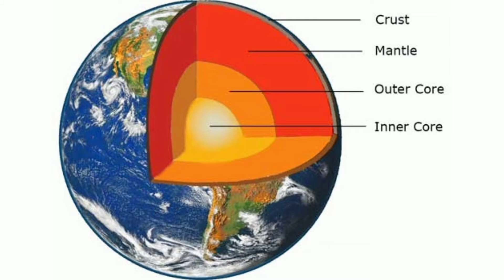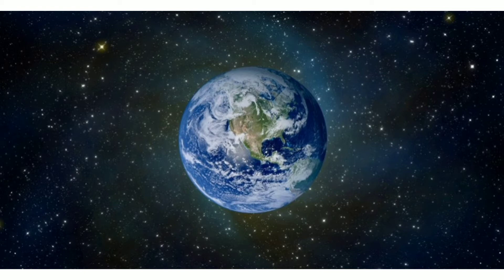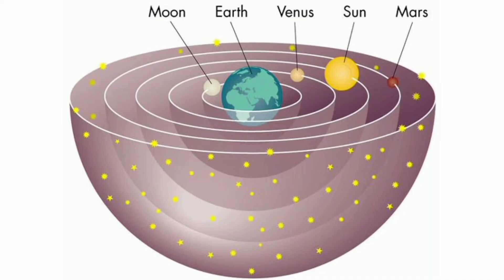They are crust, mantle and core. Earth is the only planet not named after a god. Rest all planets are named after many Greek gods. Earth is the densest planet of the solar system. The Earth was once believed to be the center of the universe.